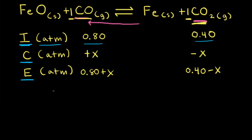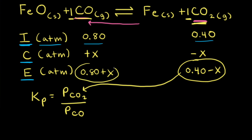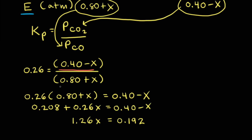Our next step is to write an equilibrium constant expression for this reaction. Kp is equal to the partial pressure of carbon dioxide divided by the partial pressure of carbon monoxide. The expressions for Kp and Qp look the same, but the difference is that for Kp it's the equilibrium partial pressures only, whereas for Qp it's the partial pressures at any moment in time. Since for Kp we're talking about equilibrium partial pressures, we can take those directly from our ICE table and plug them in. The equilibrium constant Kp is equal to 0.26 for this reaction.